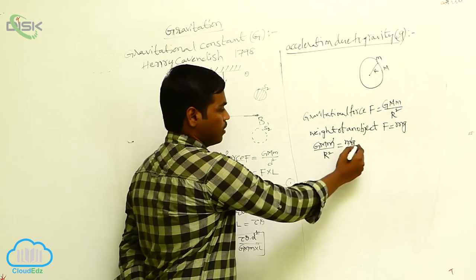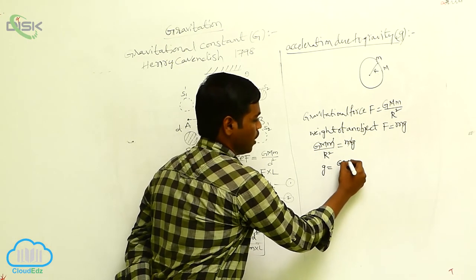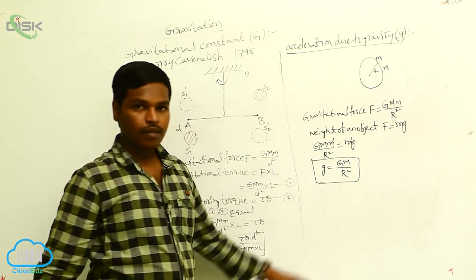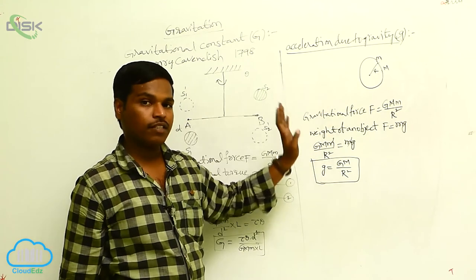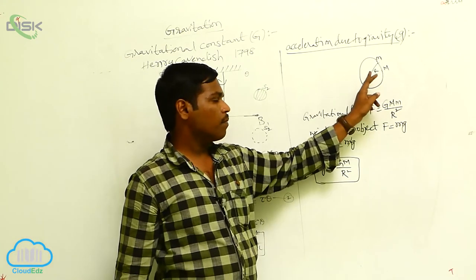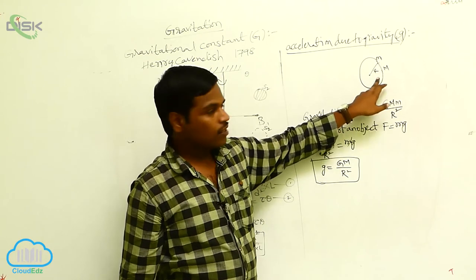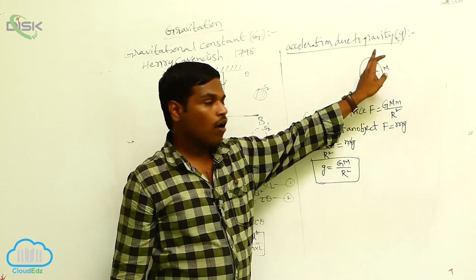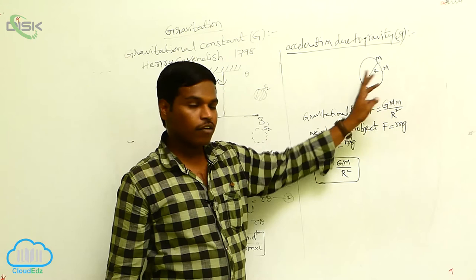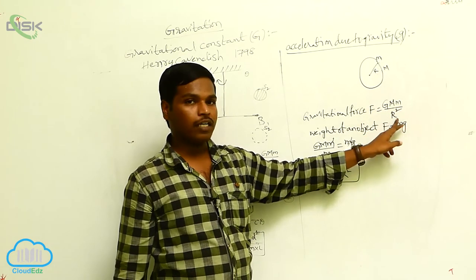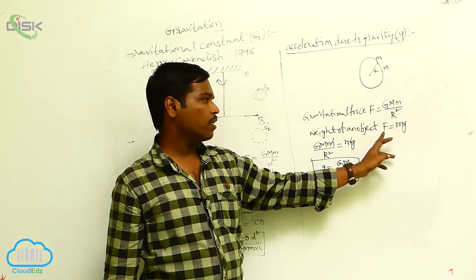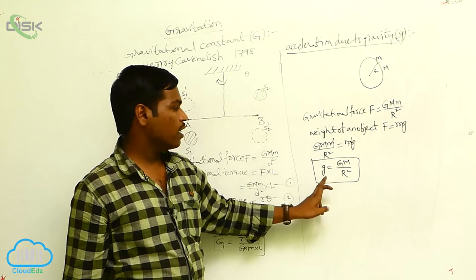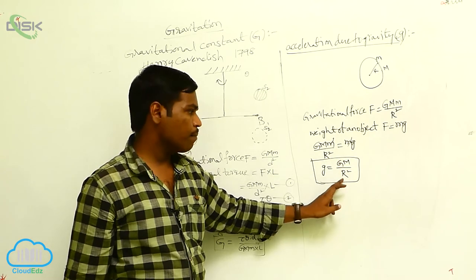The small mass m gets cancelled, then we will get g equals G·M divided by R squared. Here this is the acceleration due to gravity on the planet of capital mass M. The gravitational force between the two masses is G·M·m divided by R squared, and the weight F equals m·g, giving us g equals G·M divided by R squared.